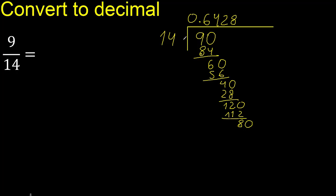We now have 80. 14 multiplied by 5 gives 70. We subtract and complete, giving us 100.